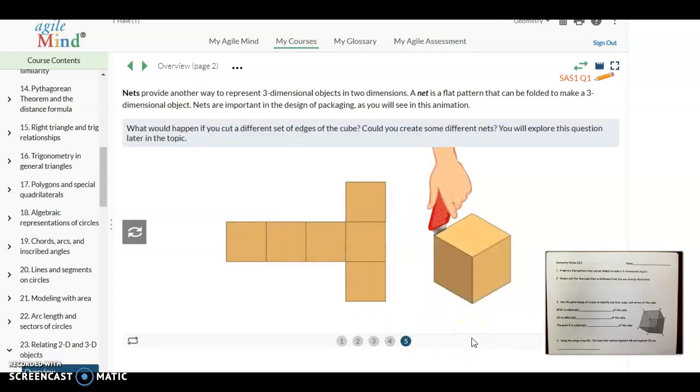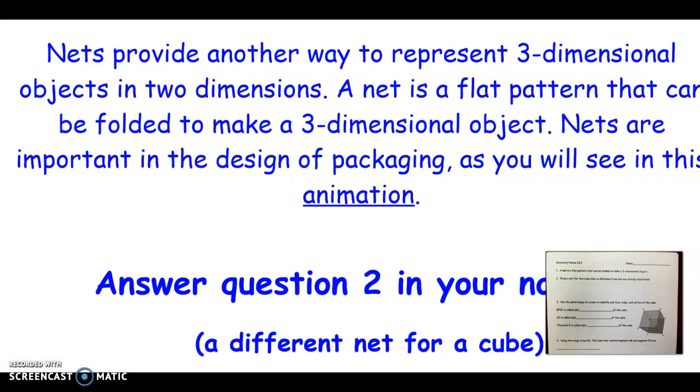Now that is only one example of a net of a cube. There's lots of different ways that you could draw a net for a cube. Now it's only a unique net if it's not a reflection or rotation of this one. So for example, this one is kind of a sideways T. If I rotate it and make it a right side up T, that's not a different net. That's the same one. So if it's simply a reflection or rotation of this one, that's not a different net. So it would have to be completely different. And we'll look at some more examples of nets of cubes here in a little bit. So your question two on your notes is for you to draw one that you think would work for a cube that's different from the one that they just showed you. So you can pause the video here and go ahead and draw that and then we might possibly see your net here in just a moment.